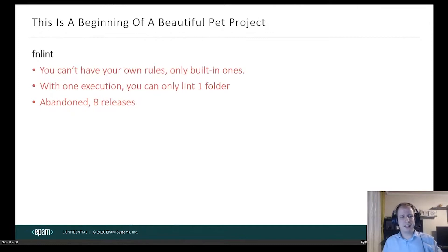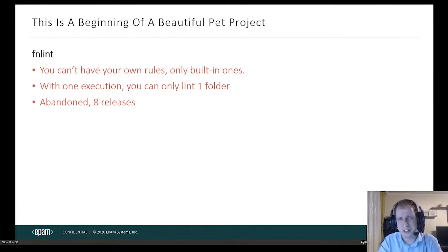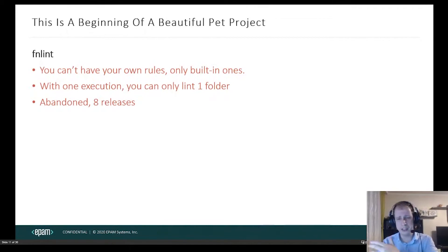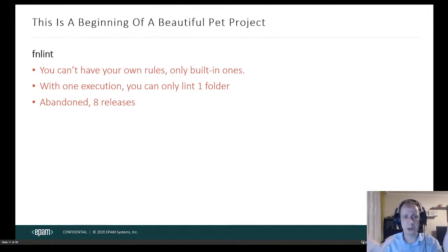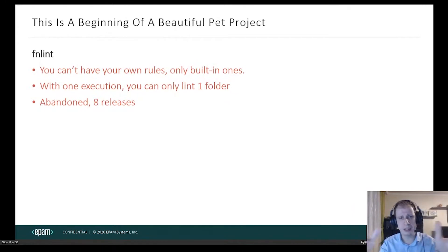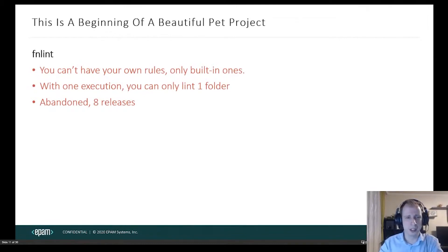Another shortcoming was that you can specify different rules for different folders — that flexibility was lacking. Then I also found something called FNLint, short for file name lint, which was not a really good library. It was kind of abandoned, only supported built-in rules, and with one execution you could only specify one folder to lint. If you had different rules for different folders, you'd need to execute this tool multiple times via an NPM script or bash script.